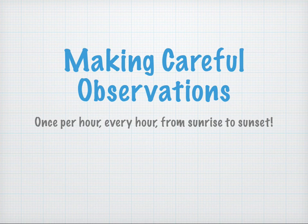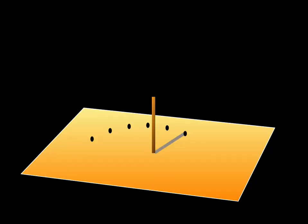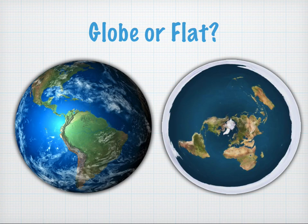Making careful observations. You're going to do it once per hour, every hour, from sunrise to sunset. I like to mark the actual time that I record the observation, just in case you want to come back later and perform an analysis with the times. You're going to have a pattern of shadows. As you mark these shadows, you're going to get a pattern. And that's really what we're going to analyze. Is it a globe Earth? Is it a flat Earth? Let's take a look.